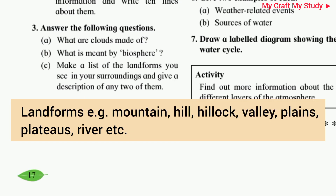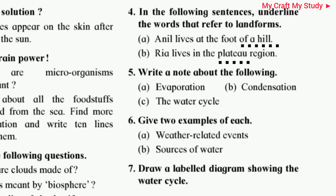Question number 3c: Make a list of the landforms you see in your surroundings and give a description of any two of them. Students, you need to write the description of the landforms along with examples. For instance, a mountain — a mountain is made from rock and tectonic activities. Similarly, you can also describe valleys, plains, plateaus, and rivers.